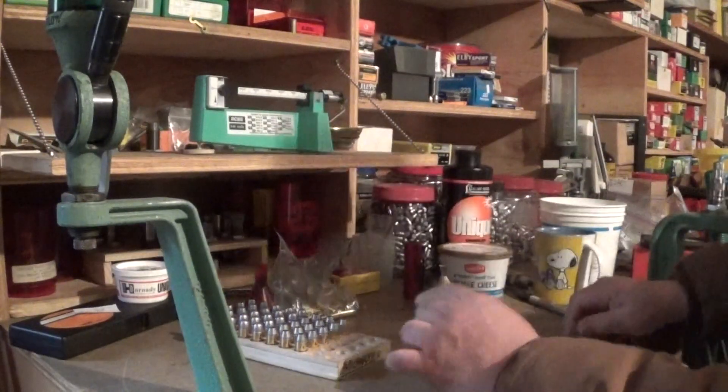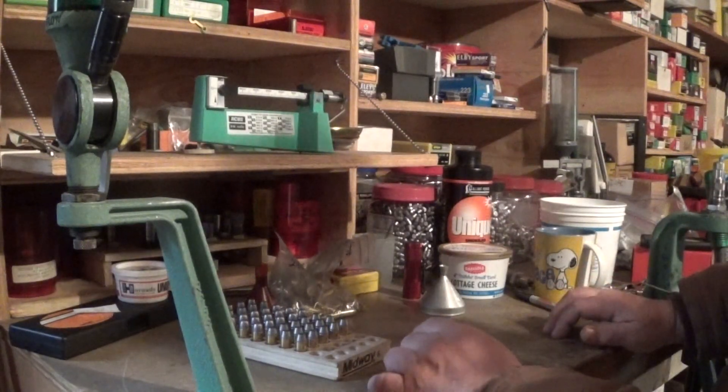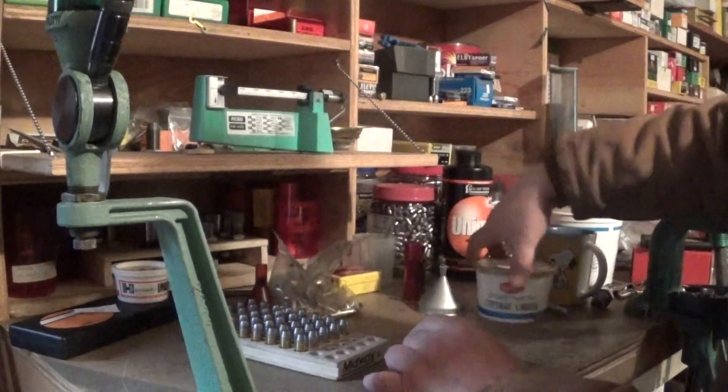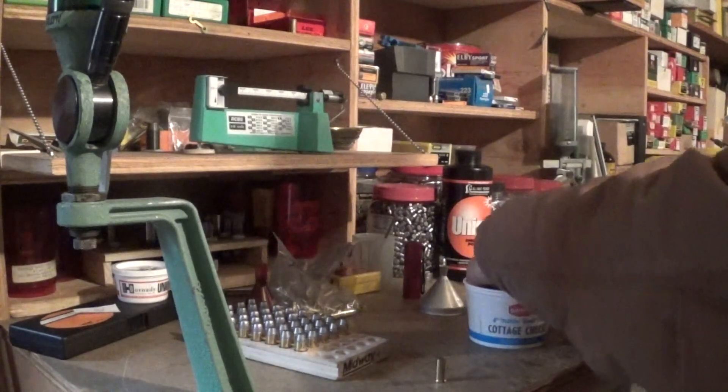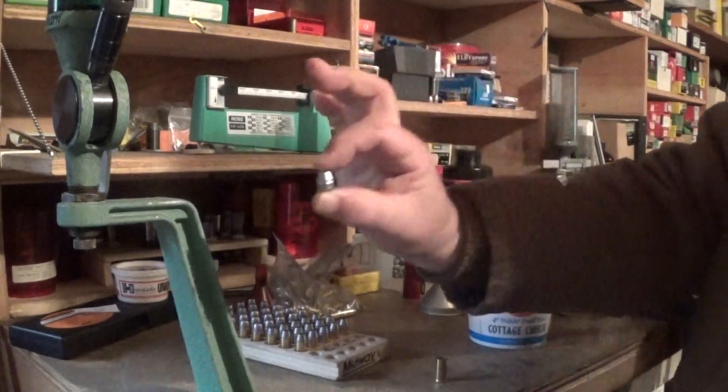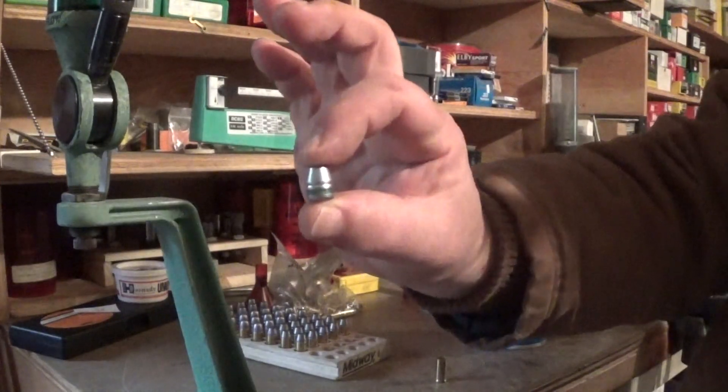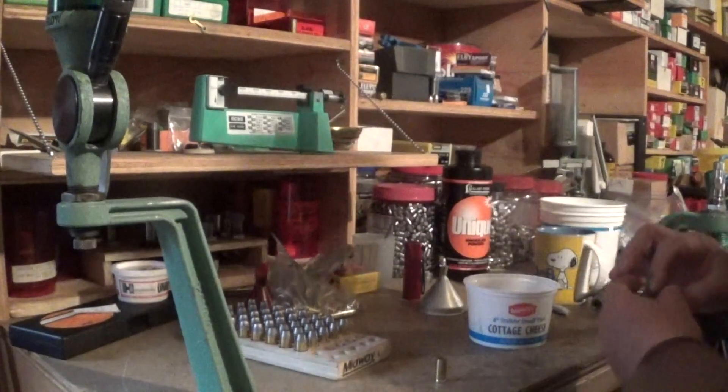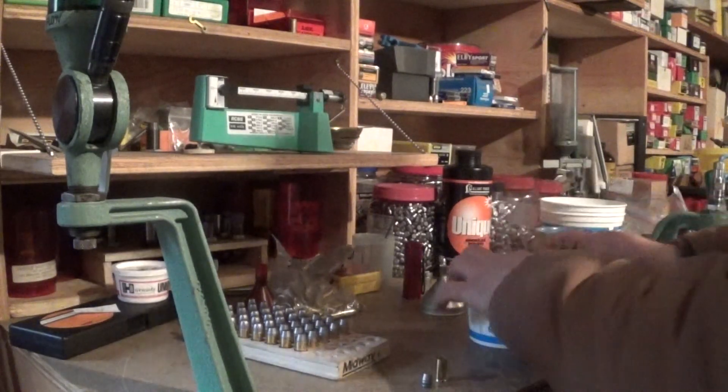So the next order of business is what we're going to do is we're going to take the Aardvark Enterprise bullet, this little guy right here, and we're going to load that with 4.5 grains of bullseye too.